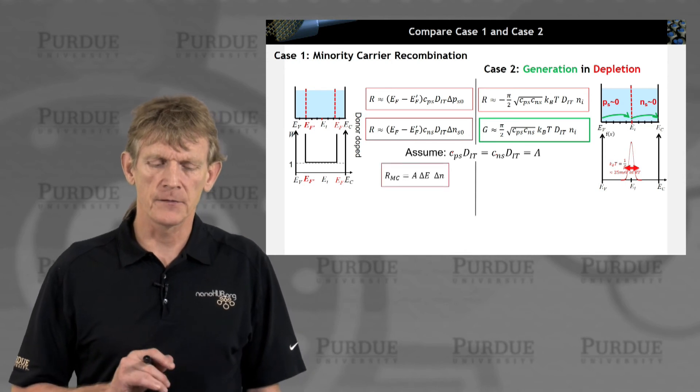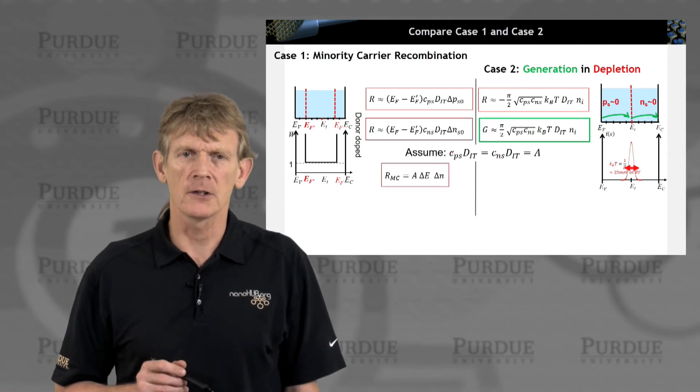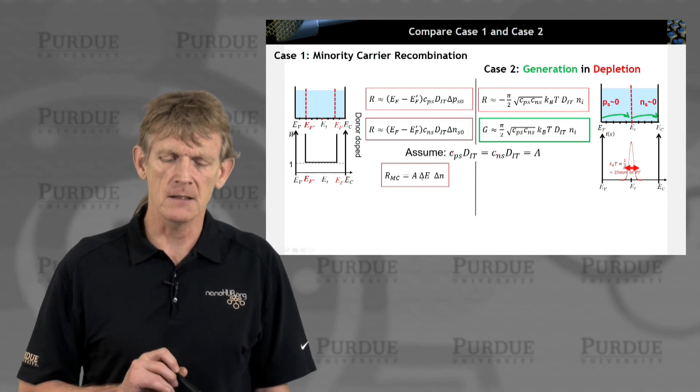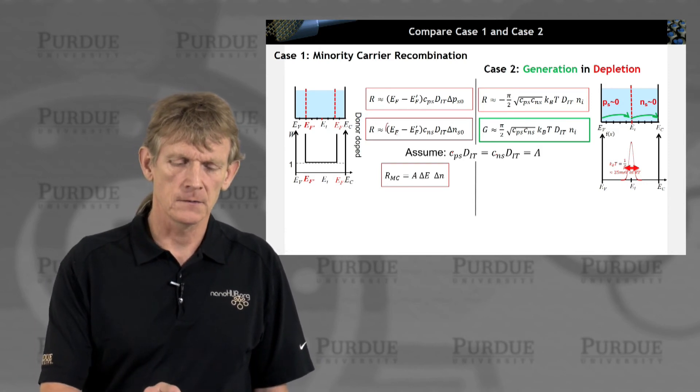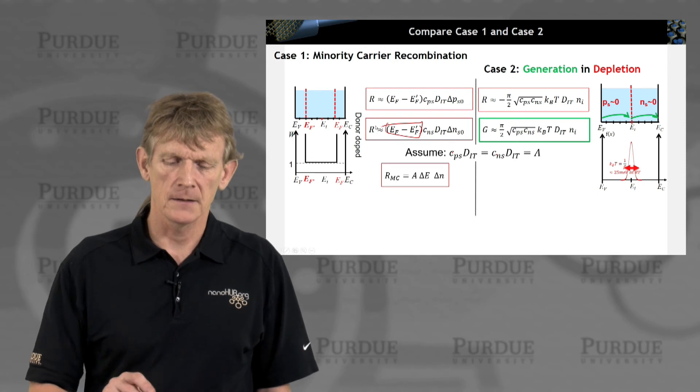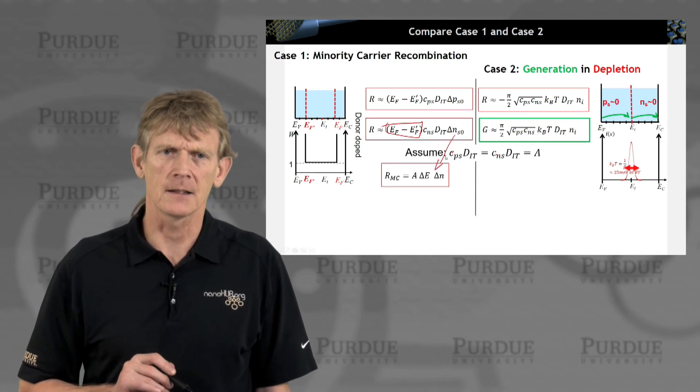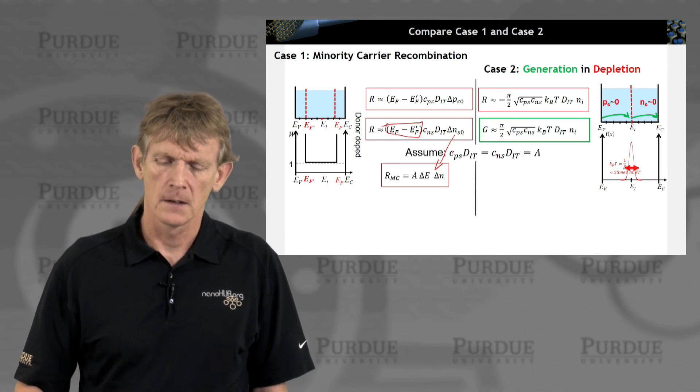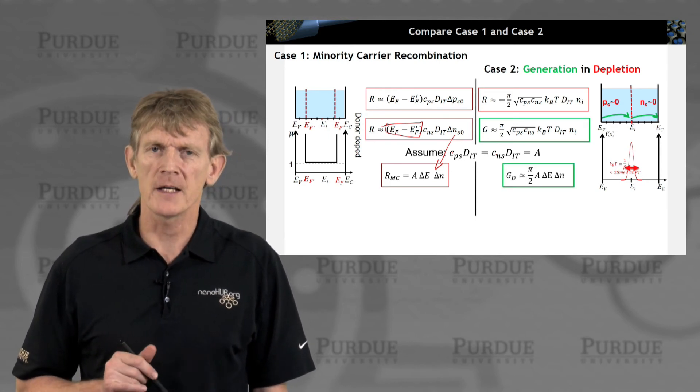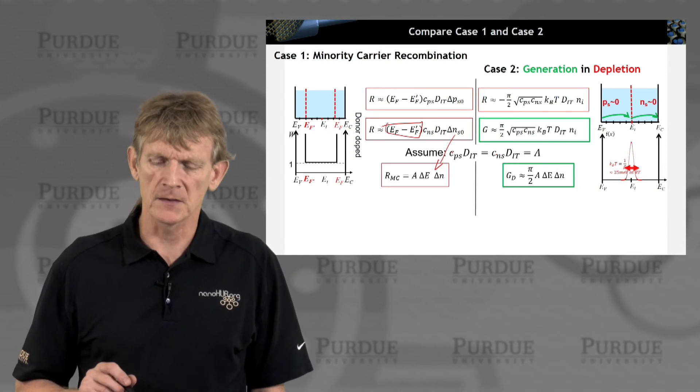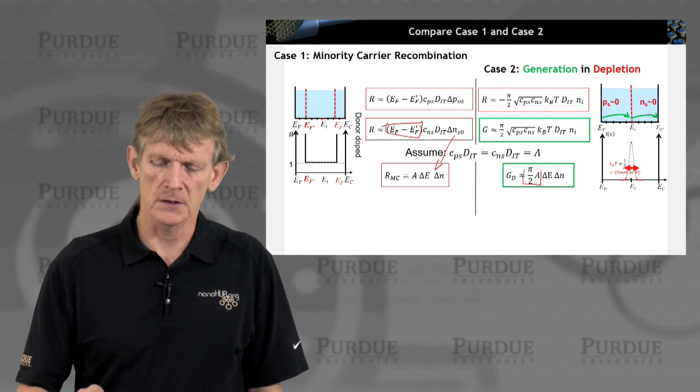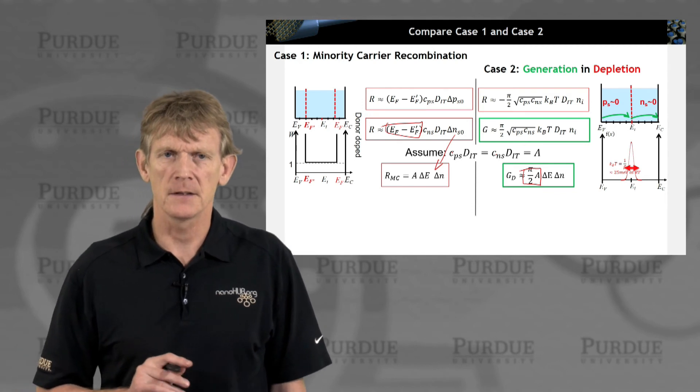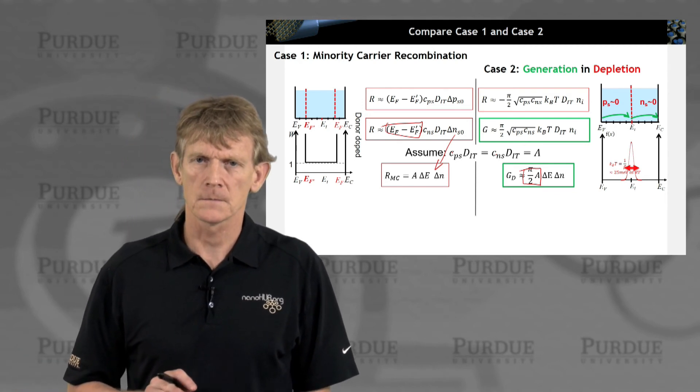Let's squint a little further and write down the minority carrier recombination as this a, delta e, where delta e is this, and the excitations, the carriers that got excited above the equilibrium value. Now, for the generation term, we have something similar. We have some coefficient ballpark a, an energy range, and the excitation level.